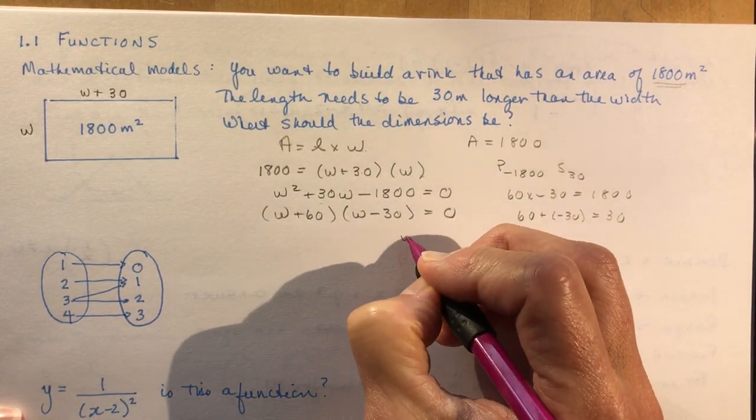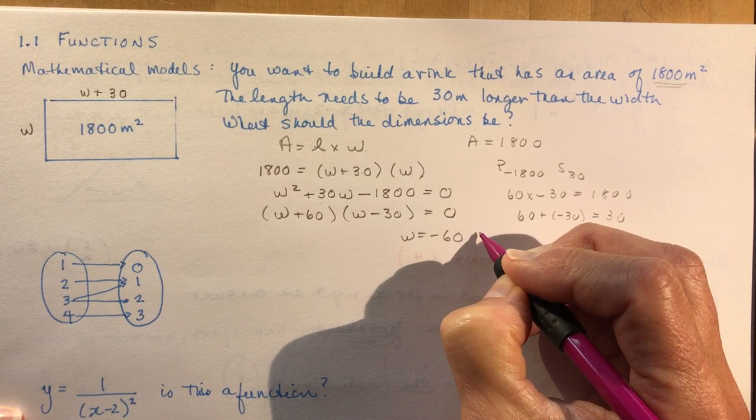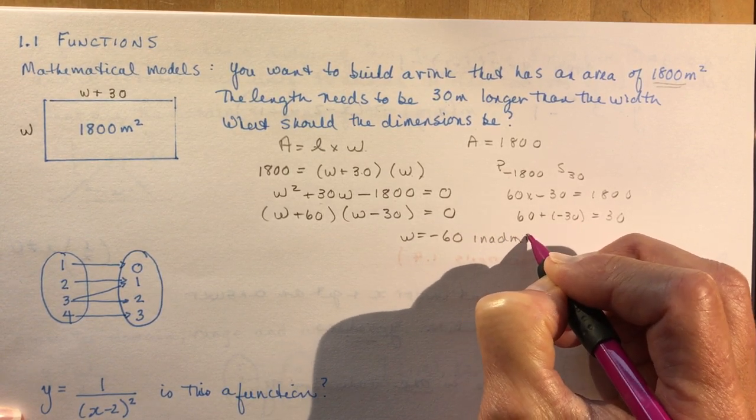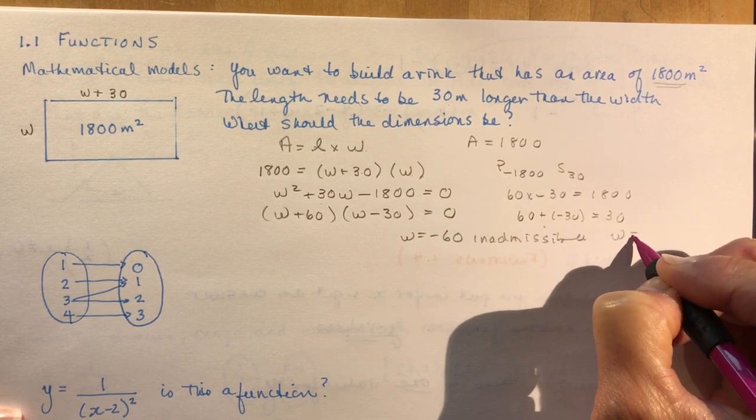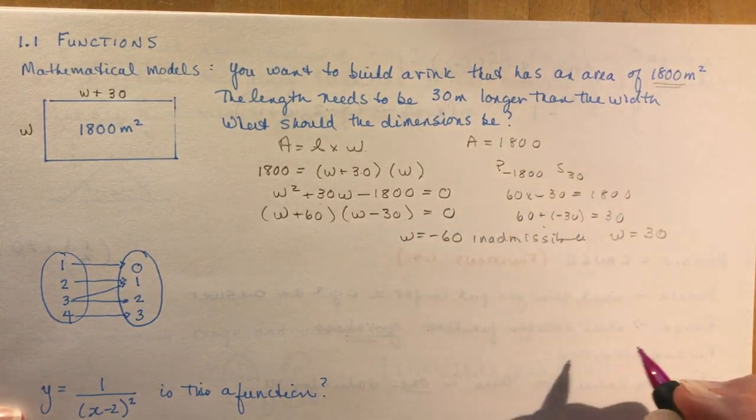So that would say the width is going to be negative 60, which you should say right away, I can't have a negative length so it's inadmissible. And we say then the width will be 30. So if the width is 30, then you should have a concluding statement.